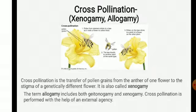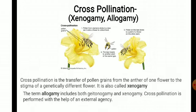Cross-pollination means transfer of pollen grains from the anther of one flower to the stigma of a genetically different flower. Cross-pollination is also commonly called xenogamy. For cross-pollination to occur, we need pollinators or external agencies which help in the transfer of pollen grains from one flower to another.